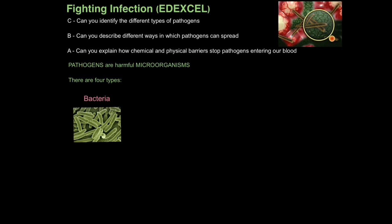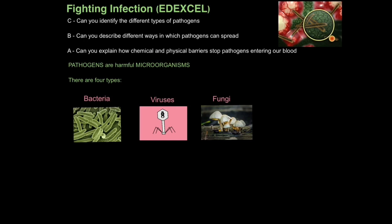Bacterial infections include cholera and salmonella. Next, we have viruses, which are about 100 times smaller than bacteria, and bacteria are about 100 times smaller than our cells — so that gives you an idea of how small viruses are. The most famous viruses are HIV and the influenza virus, which causes flu. Fungi are relatively larger microorganisms, responsible for diseases such as athlete's foot and ringworm. And finally, protozoans are single-cell organisms — an example of protozoan infection would be malaria.